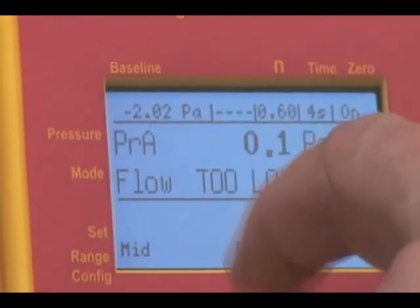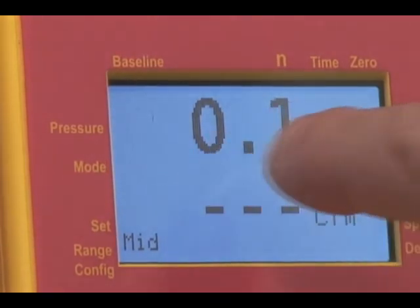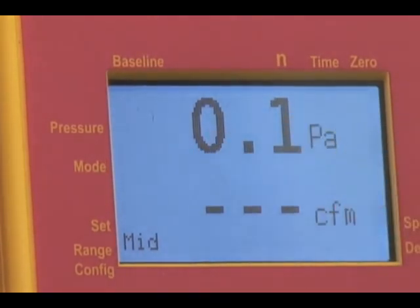So the minus 2 Pascals that we were showing before has evaporated because the baseline pressure that we've acquired has eliminated the bias pressure that we've been experiencing.